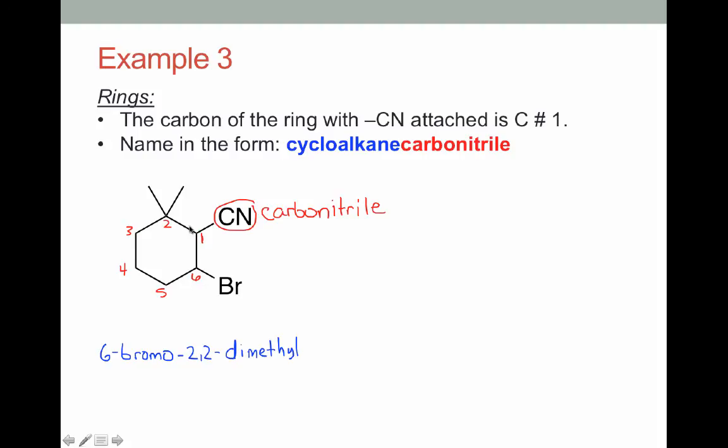And we're going to name this as cyclohexane. And now we'll follow this name with carbonitrile. And this carbo term really represents the fact that the carbon of the nitrile isn't counted in with the carbon count in the parent. So that's how we name it when the nitrile is on a ring.